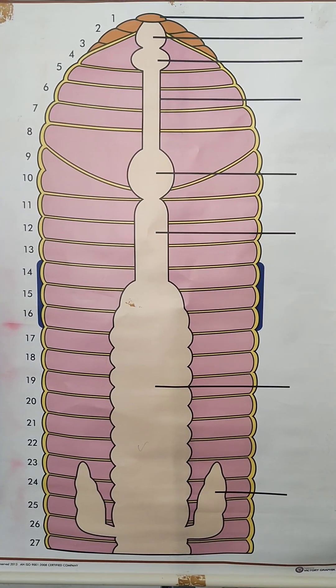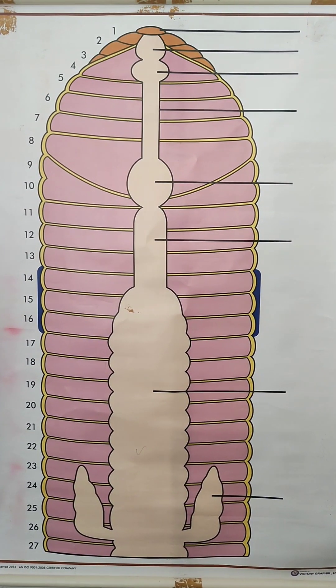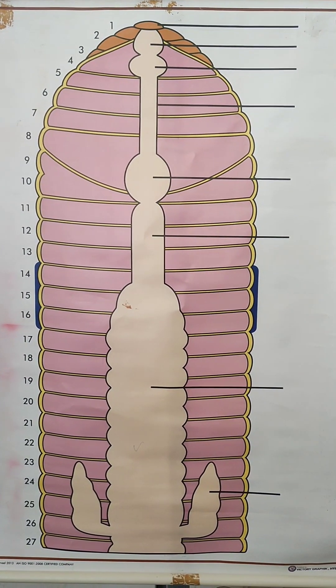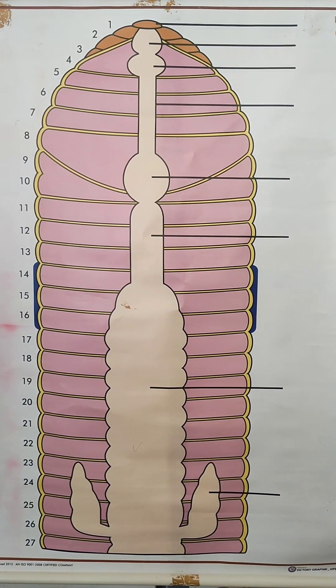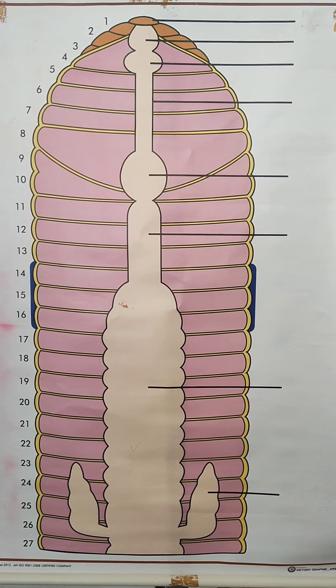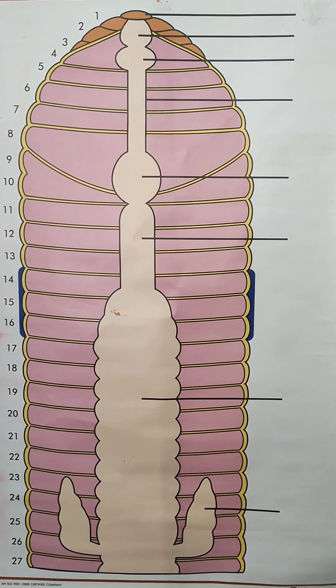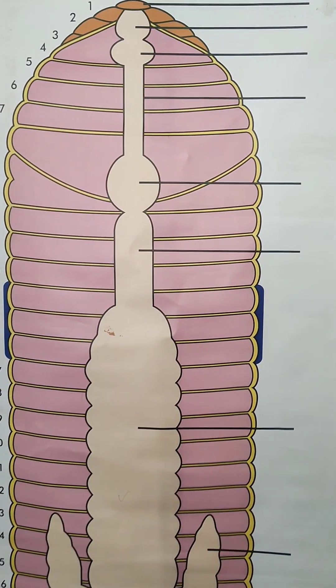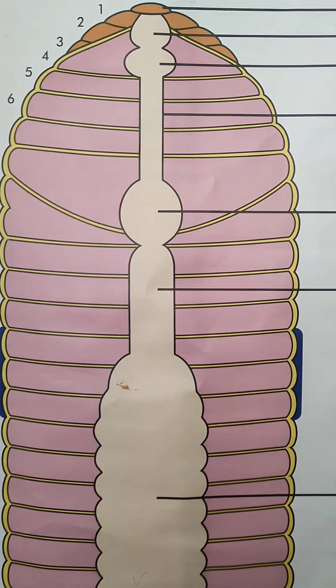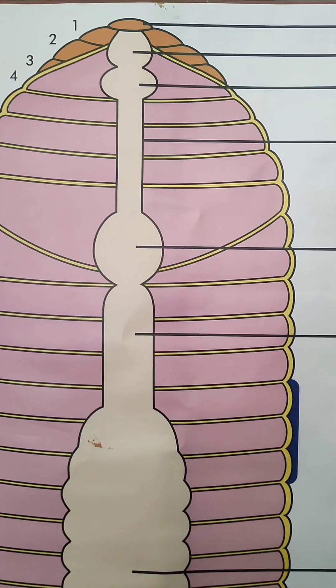In Zoology practicals, the first part is the unlabeled chart. We have to identify the chart and diagram and do the labeling — at least 2 to 4 labellings.